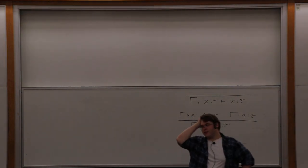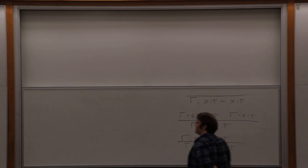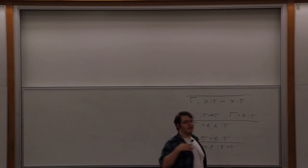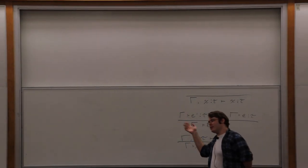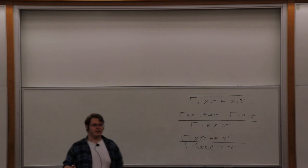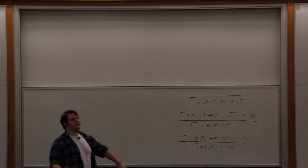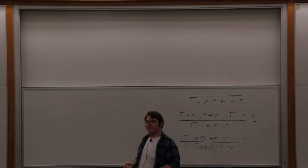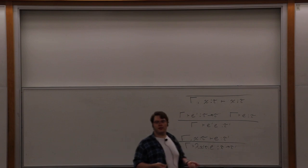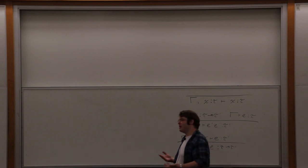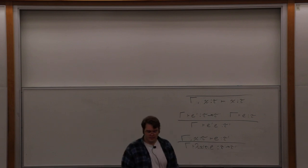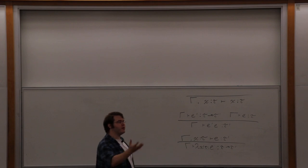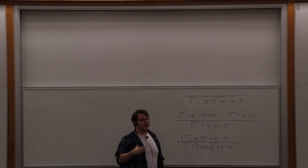Remember yesterday when I was talking about polymorphism in System F? Near the end I talked about type erasure — if I have a program with types in it, I can erase all the types and still get a good program that does the same thing. As computer scientists, what we really care about at the end of the day is what programs do — their behavior. Types are just a means to an end for constraining or describing that behavior. So type erasure makes sense because I don't actually care about the types per se; I care about the behavior.